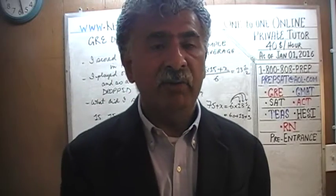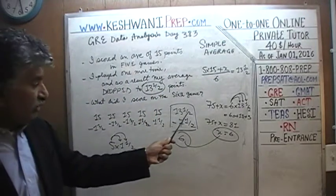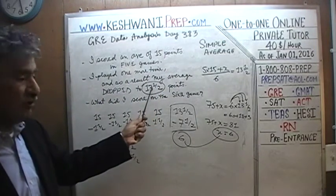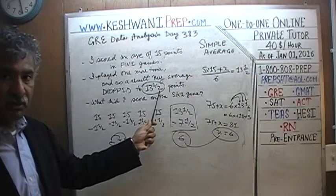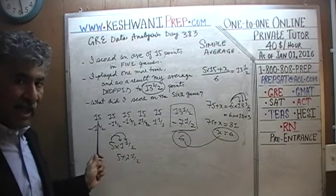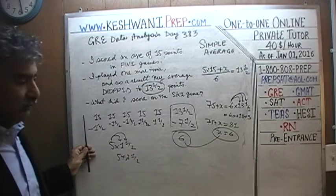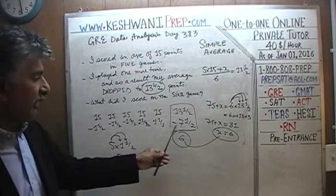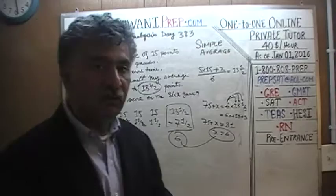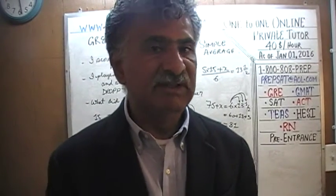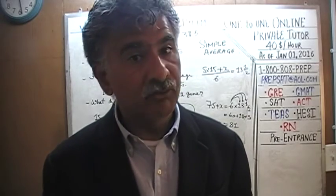X equals 6 because we have to take away one and a half from each of the five previous games. One and a half times five is seven and a half. We start by pretending the last game was 13 and a half — the new average — then subtract seven and a half, leaving 6 points. He did very poorly in the last game. I'll see you tomorrow — bye!